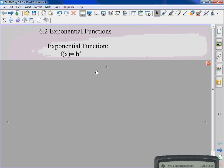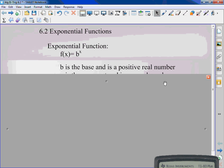Exponential function: f(x) equals b to the x. b is the base, and it is always going to be a positive real number. Well, it doesn't have to be, but for right now. x is the exponent, and is any real number.